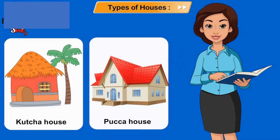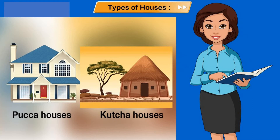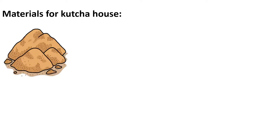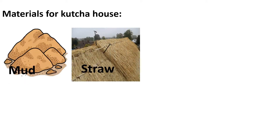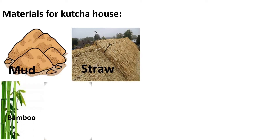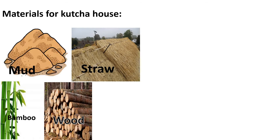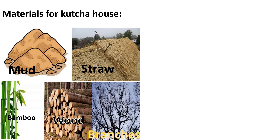We have also known about different kinds of houses — kaccha house and pakka house. Pakka houses are strong whereas kaccha houses are not strong. The materials required to make a kaccha house are mud, straw, bamboo, wood and branches.